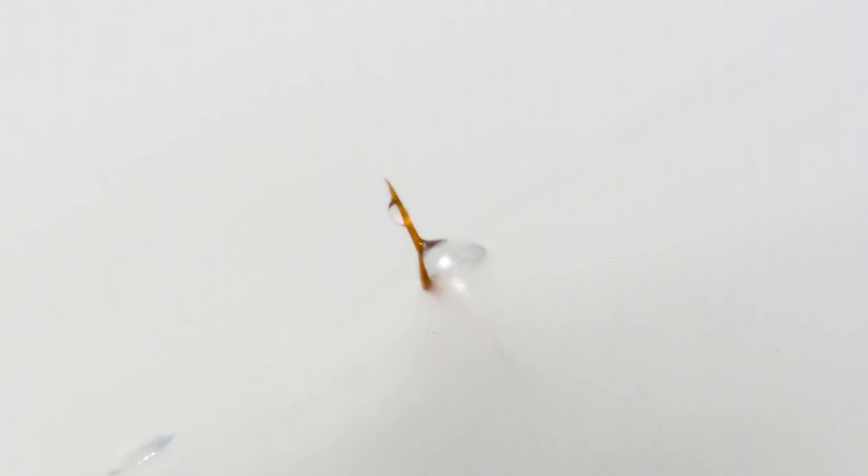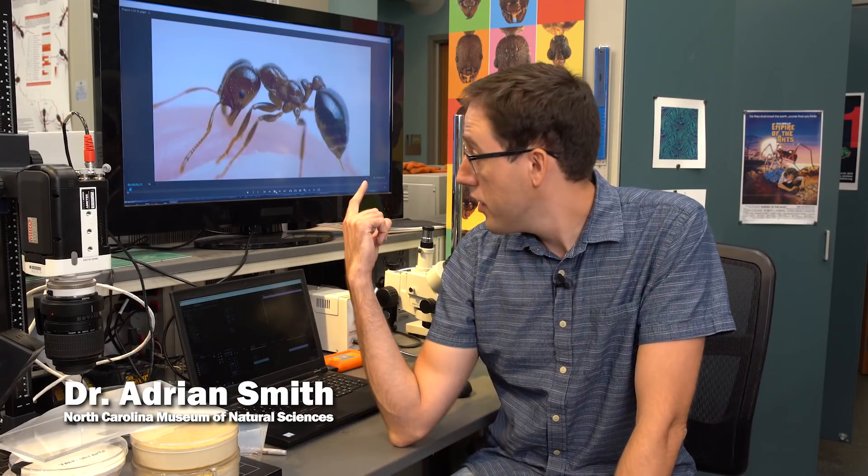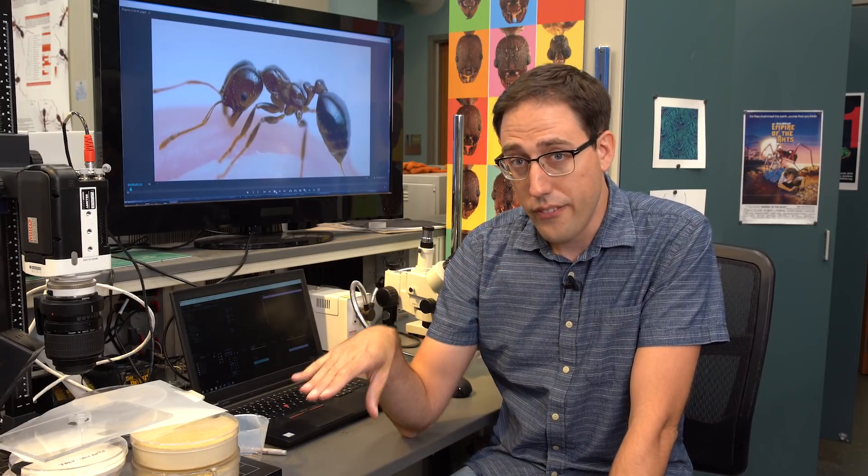This is what happens underneath your skin when an ant is stinging you. About a year ago I filmed this footage of a fire ant about to sting my finger and in the corner of the frame was something I hadn't seen before. A droplet of venom being formed at the tip of the stinger.